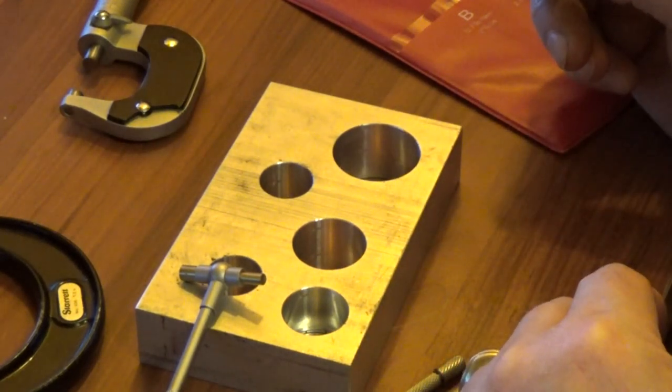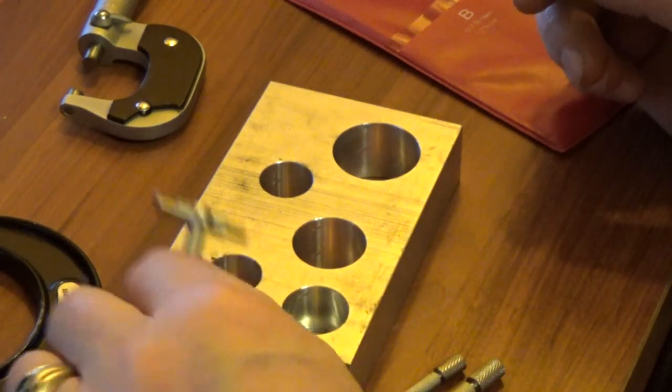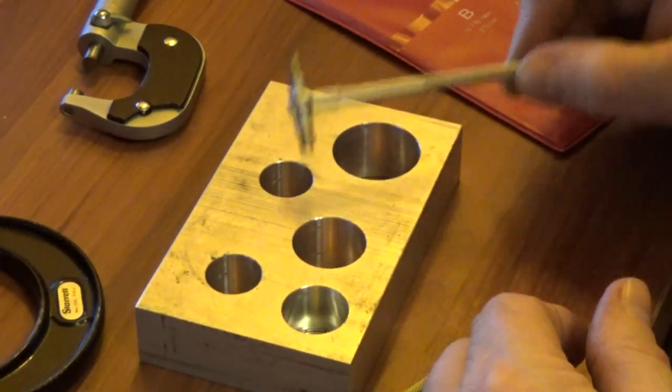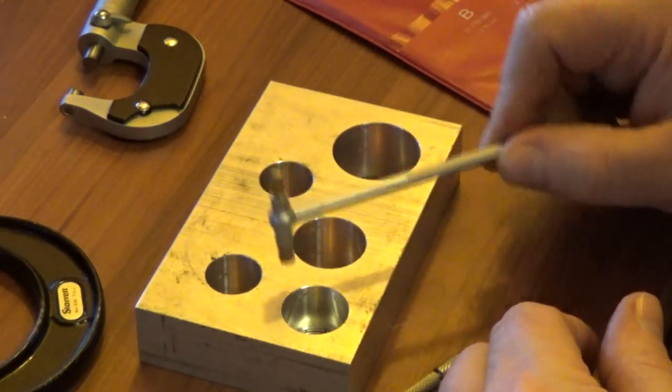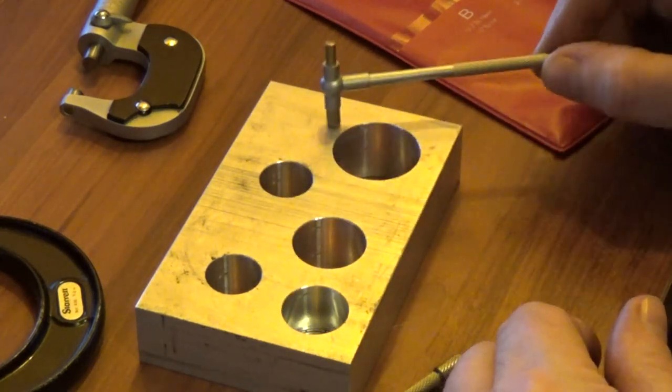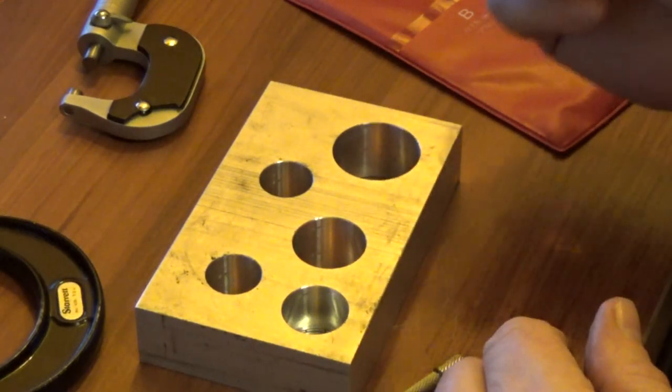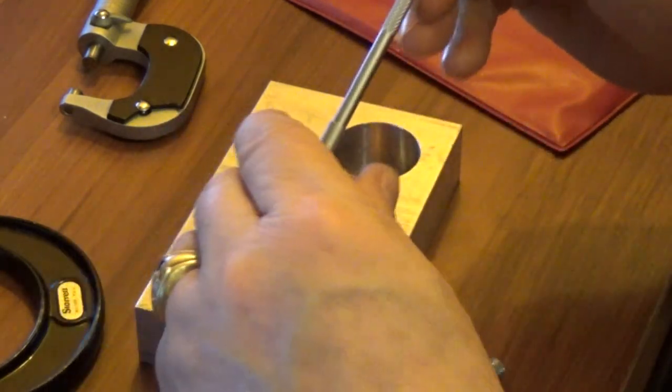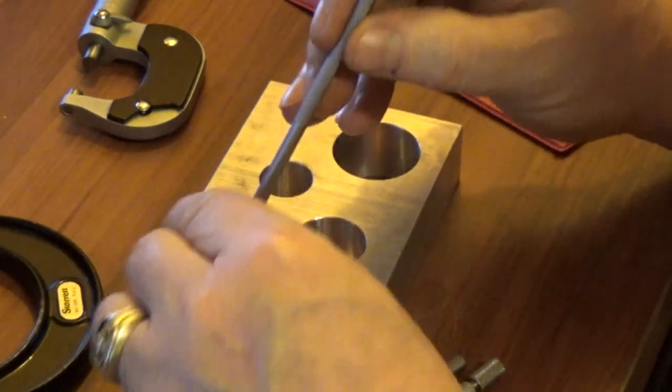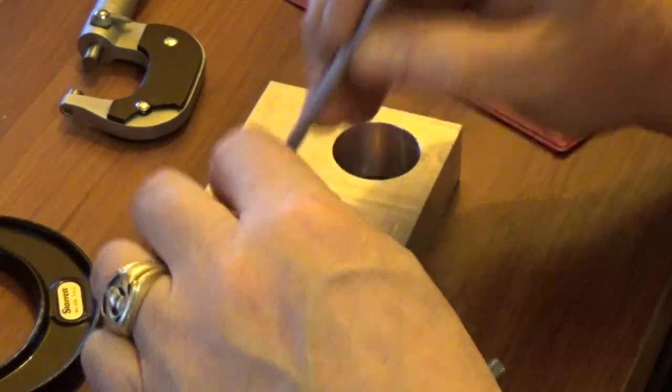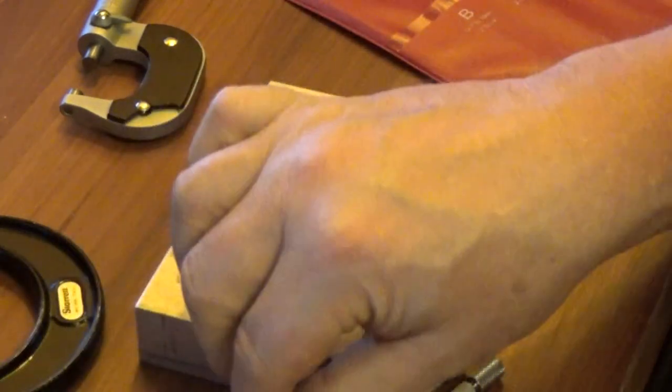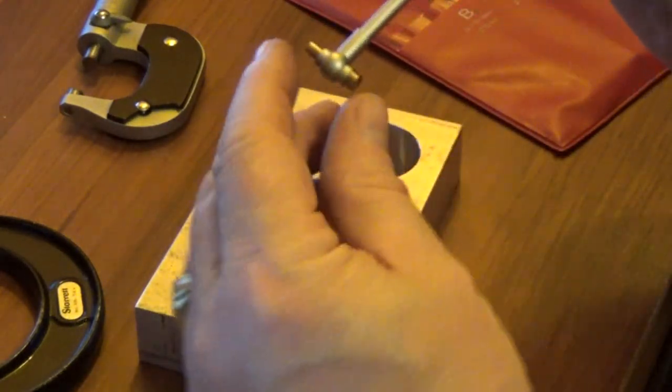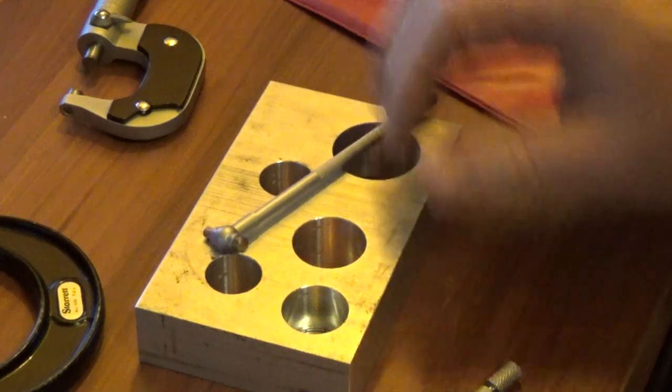Now here we have four different size holes: 3/4 inch, 7/8, one inch, and inch and a quarter. I could use all of them with this same telescoping gauge, although I hesitate to use the absolute low end unless I have to because it's kind of hard to get in there. I'm going to use this size to do 3/4 inch first, and these are all going to be pretty much the same.